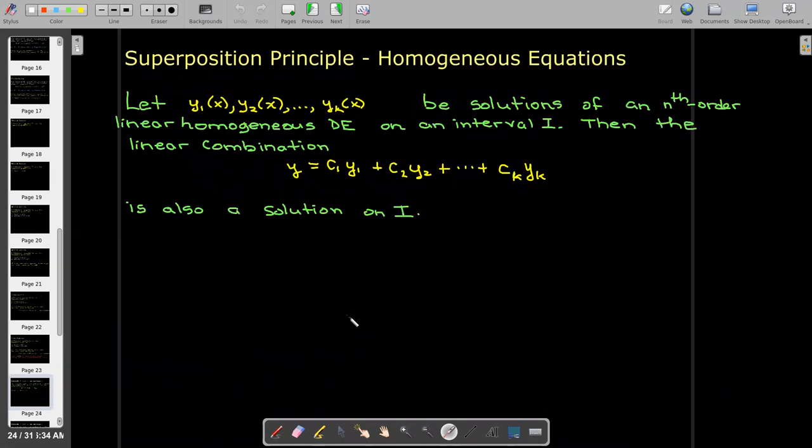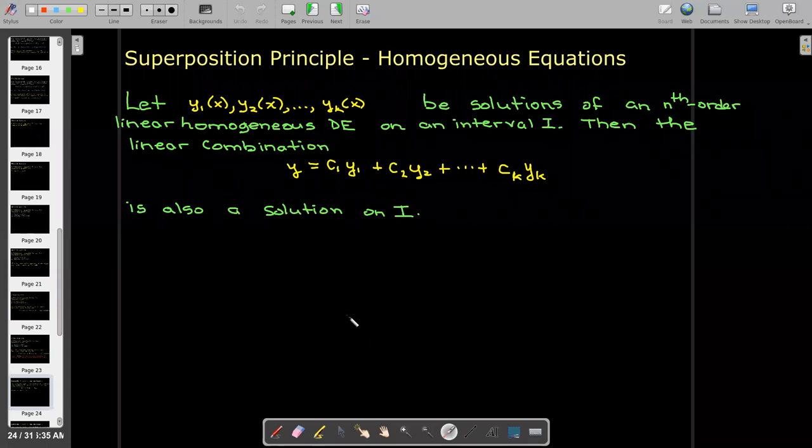We're going to see that phrase linear combination again here when we talk about the superposition principle. So this is an extremely important principle. What it says is that if you have k solutions of a homogeneous differential equation, then if you take any linear combination, in other words, if you multiply those solutions by constants and sum up the result, you'll get another solution.